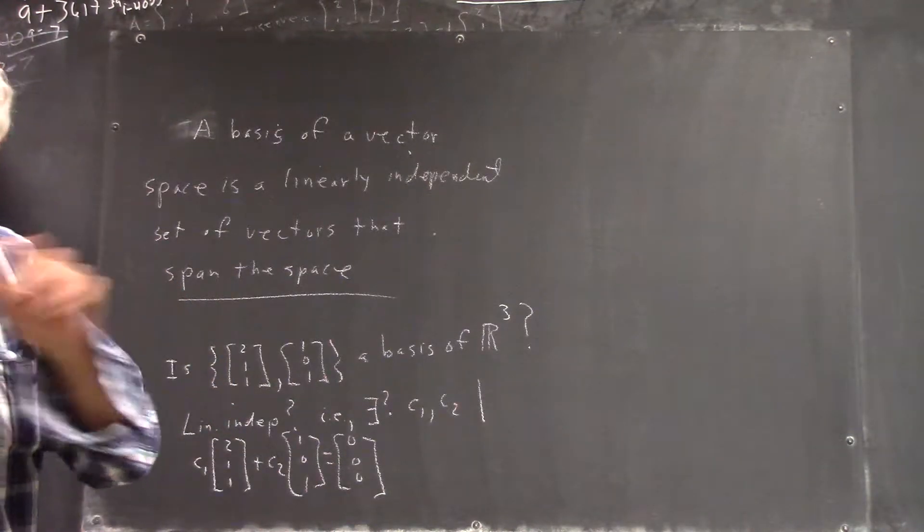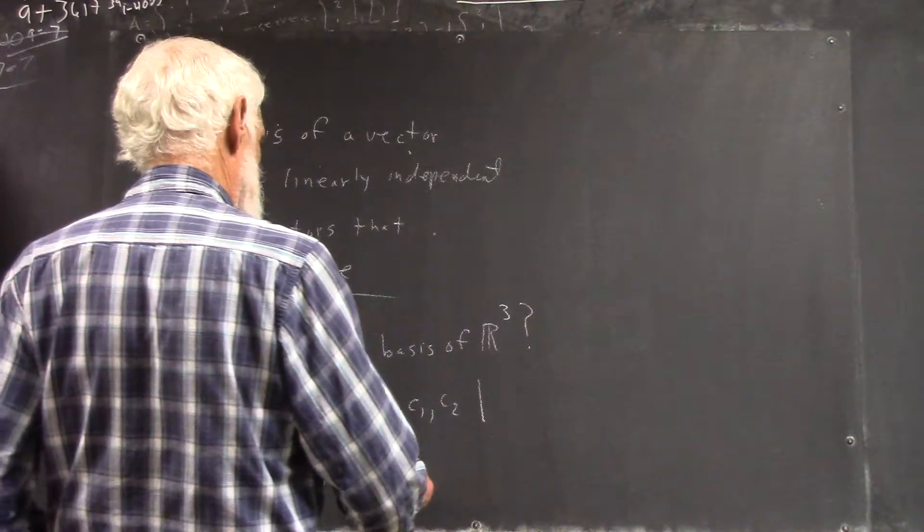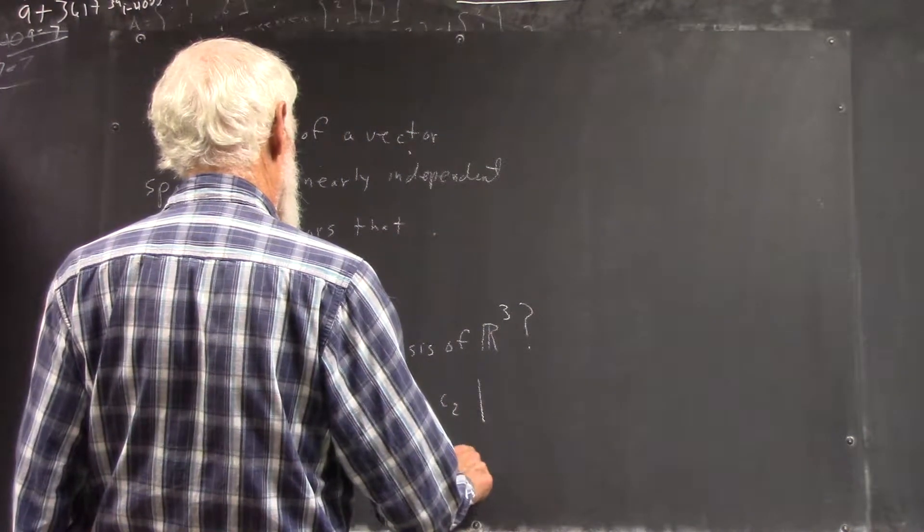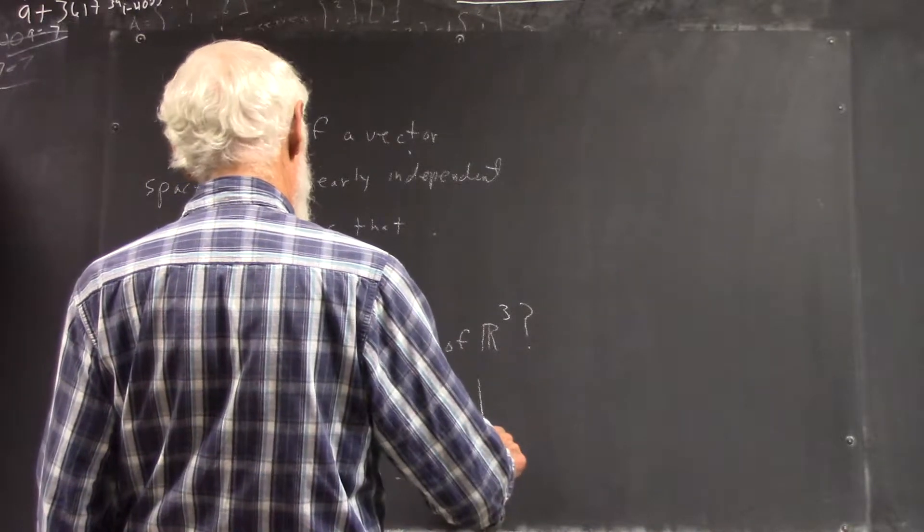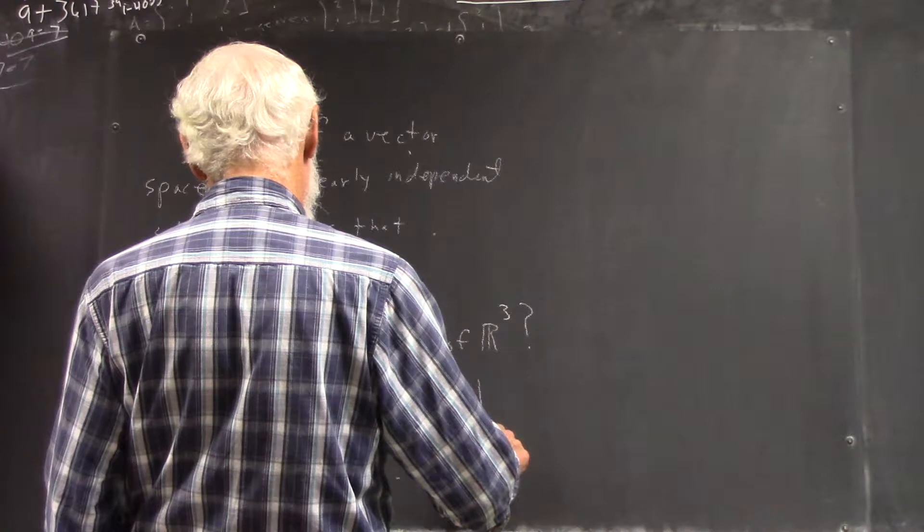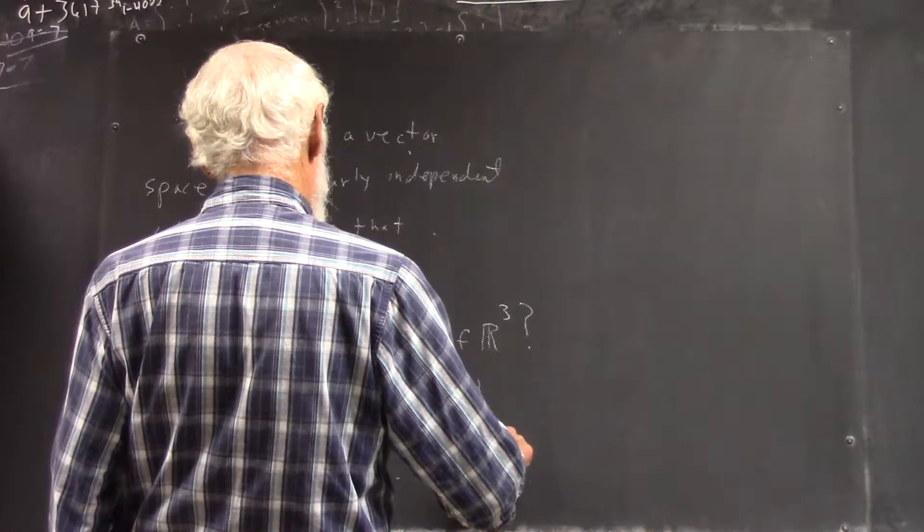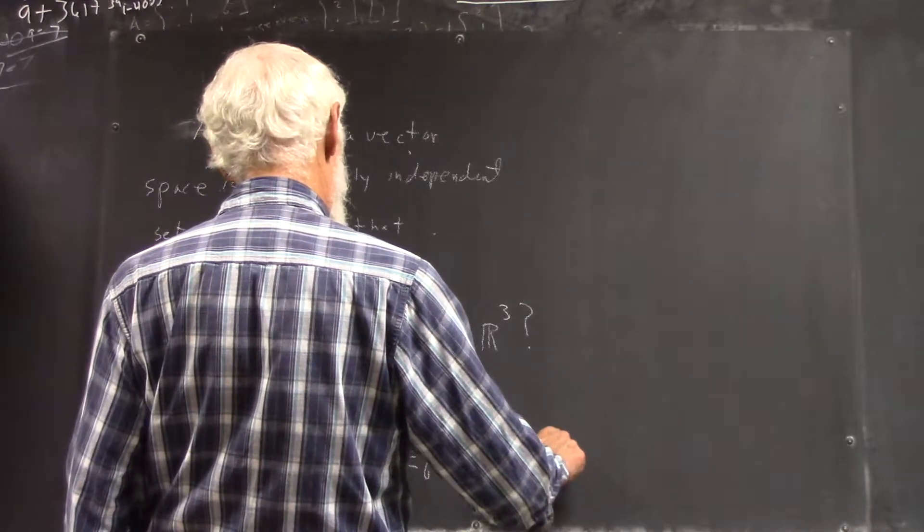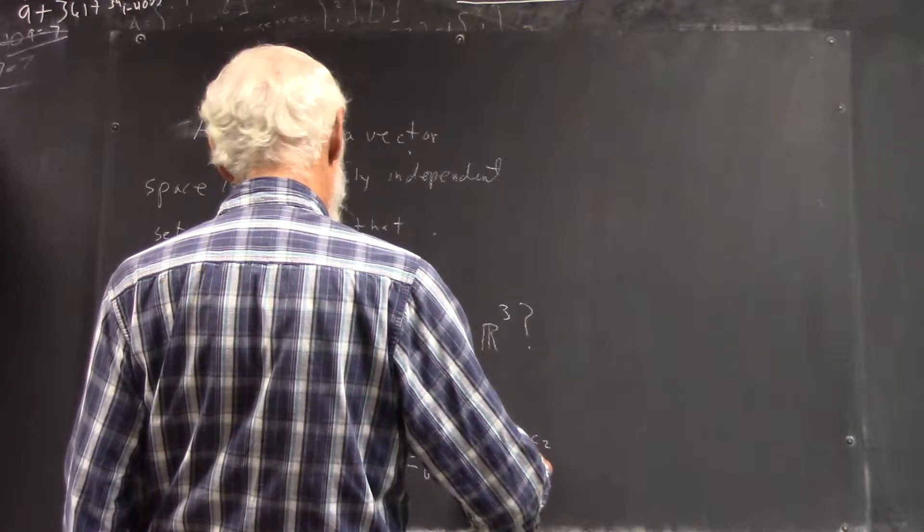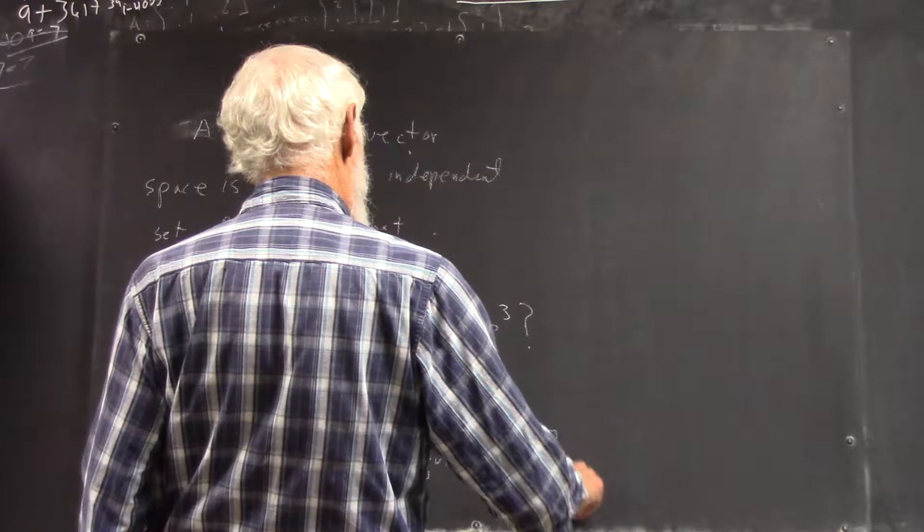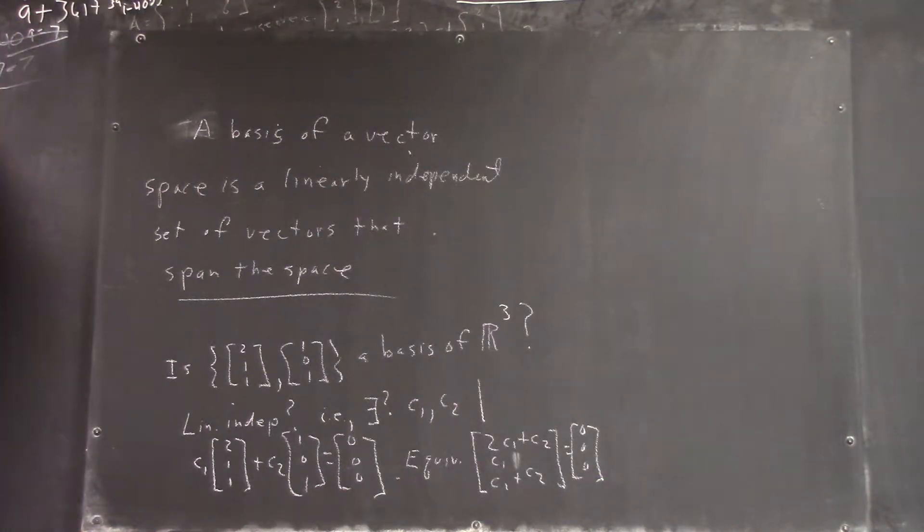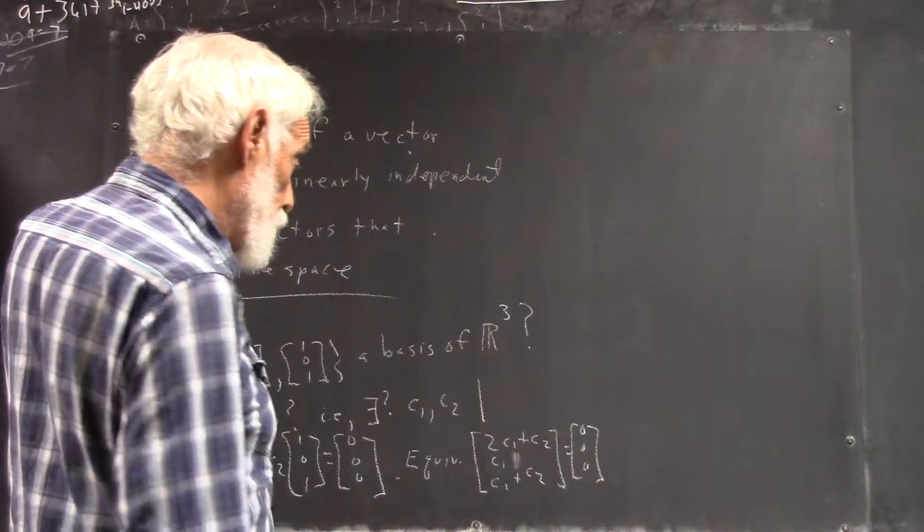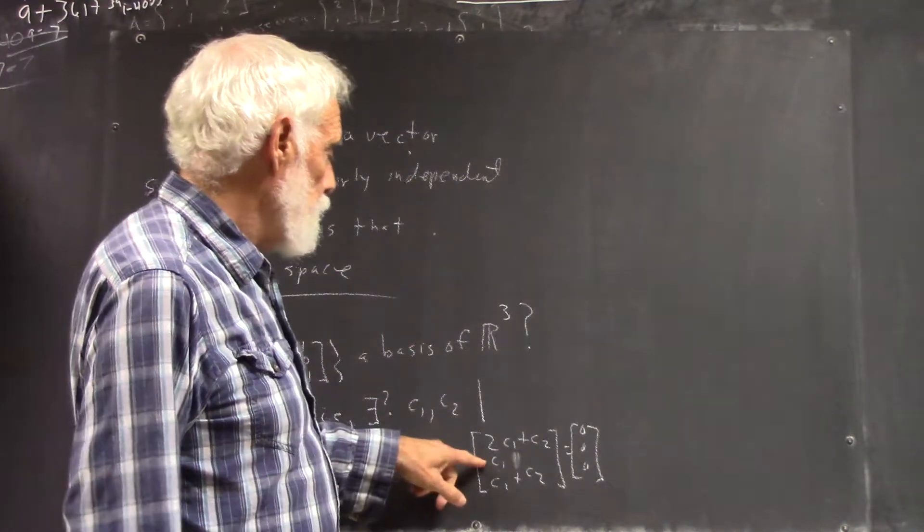So we test this. Well, this is equivalent to saying that this, right? It's three simultaneous equations and two unknowns. Now, you can show that that can't be because it shows you that c1 has to be zero.